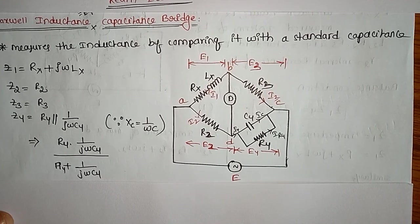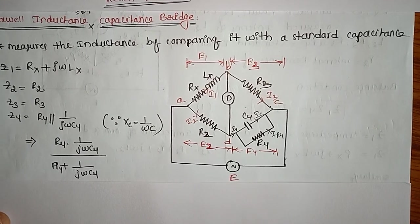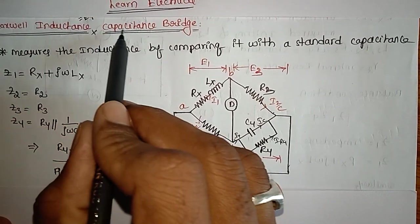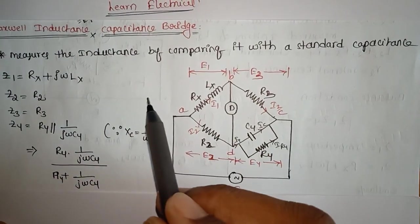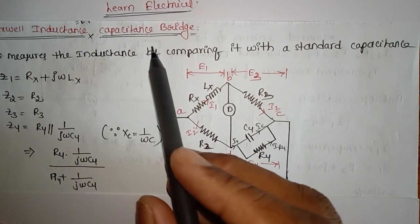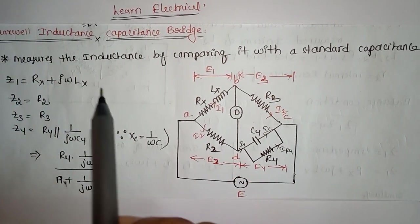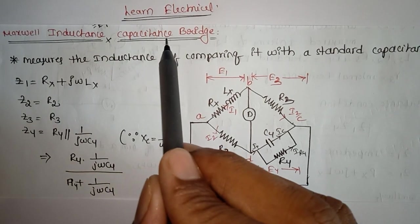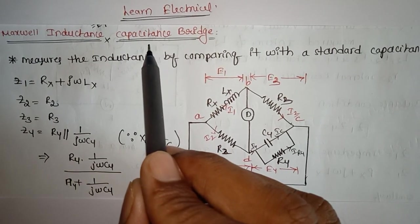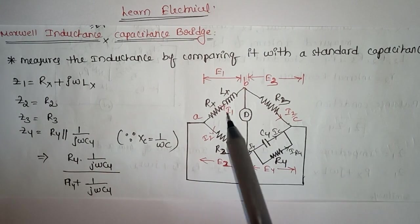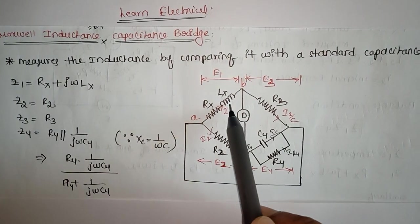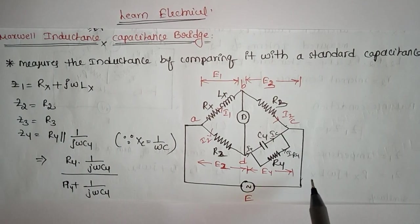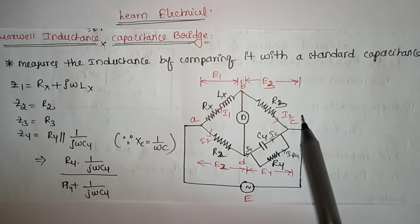Good afternoon students. Now we will discuss Maxwell's Inductance-Capacitance Bridge. In the previous class we discussed Maxwell's Inductance Bridge, where we calculated the unknown inductance in terms of a known inductance. Here we calculate the unknown inductance in terms of capacitance. This is the total circuit diagram of Maxwell's Inductance-Capacitance Bridge.